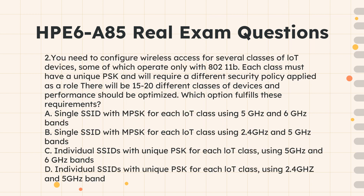Question 2. You need to configure wireless access for several classes of IoT devices, some of which operate only with 802.11B. Each class must have a unique PSK and will require a different security policy applied as a role. There will be 15-20 different classes of devices and performance should be optimized. Which option fulfills these requirements? A. Single SSID with MPSK for each IoT class using 5 GHz and 6 GHz bands. B. Single SSID with MPSK for each IoT class using 2.4 GHz and 5 GHz bands.